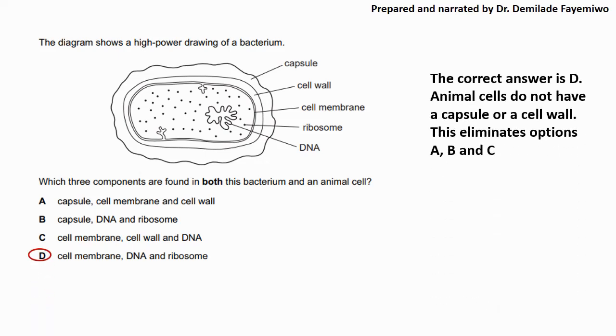The correct answer is D. Animal cells do not have a capsule or a cell wall. That means options A, B and C where you have capsule and cell wall are not the correct answers and the only answer that's possible is D. Animal cells do have a cell membrane, they have DNA and they certainly have ribosomes.